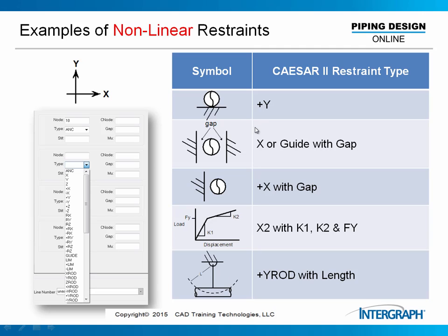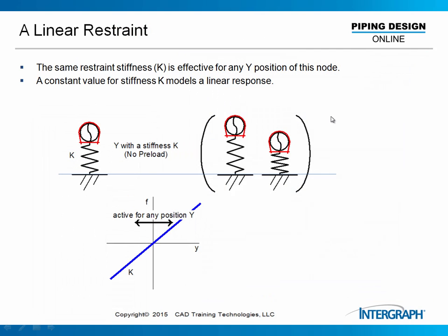Those are the different types of restraints in CAESAR II that can be either linear or nonlinear. For a linear restraint, consider a piece of pipe connected to Earth by a spring with no preload — no load when sitting cold. This load-versus-deflection plot shows that the spring rate is a constant relationship between load and deflection. Whether I pull it up or push it down, I get a load in either direction. That constant slope is the linear restraint — a straight single line.